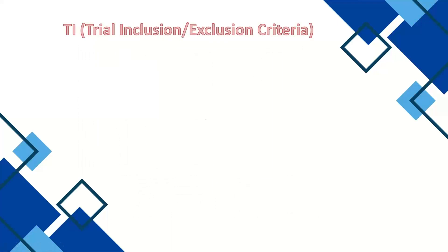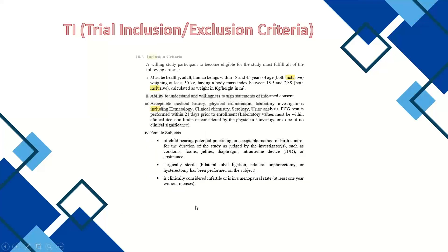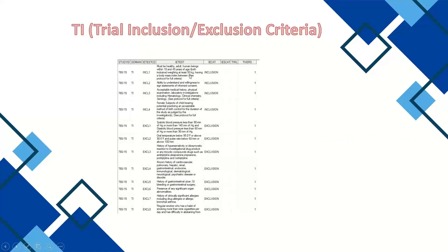The next domain is Trial Inclusion and Exclusion Criteria. Before a subject is recruited into the study, there is a set of criteria to include or exclude them. These criteria variables are defined in the implementation guide. The protocol clearly states the inclusion and exclusion criteria — you read those, prepare meaningful sentences of up to 200 characters, and enter them to create the dataset. For example: 'Must be a healthy adult human being, 18 to 45 years of age, BMI 18.5 to 29.9.' Each inclusion and exclusion criterion gets a sequential number.